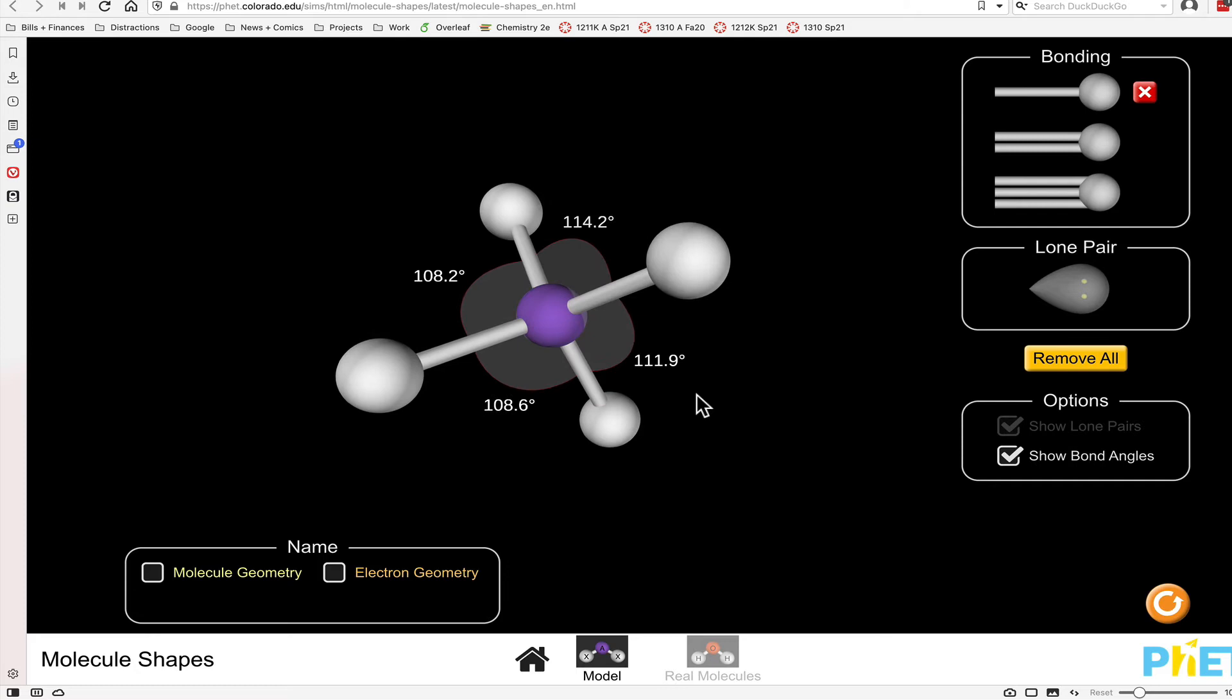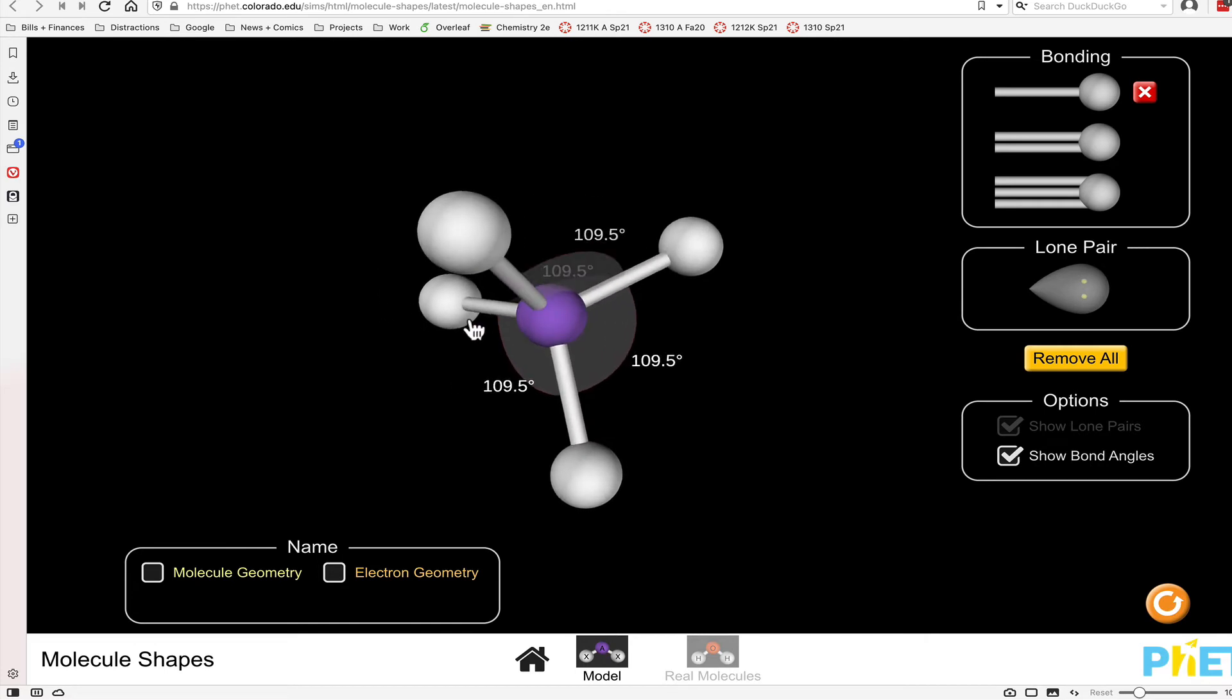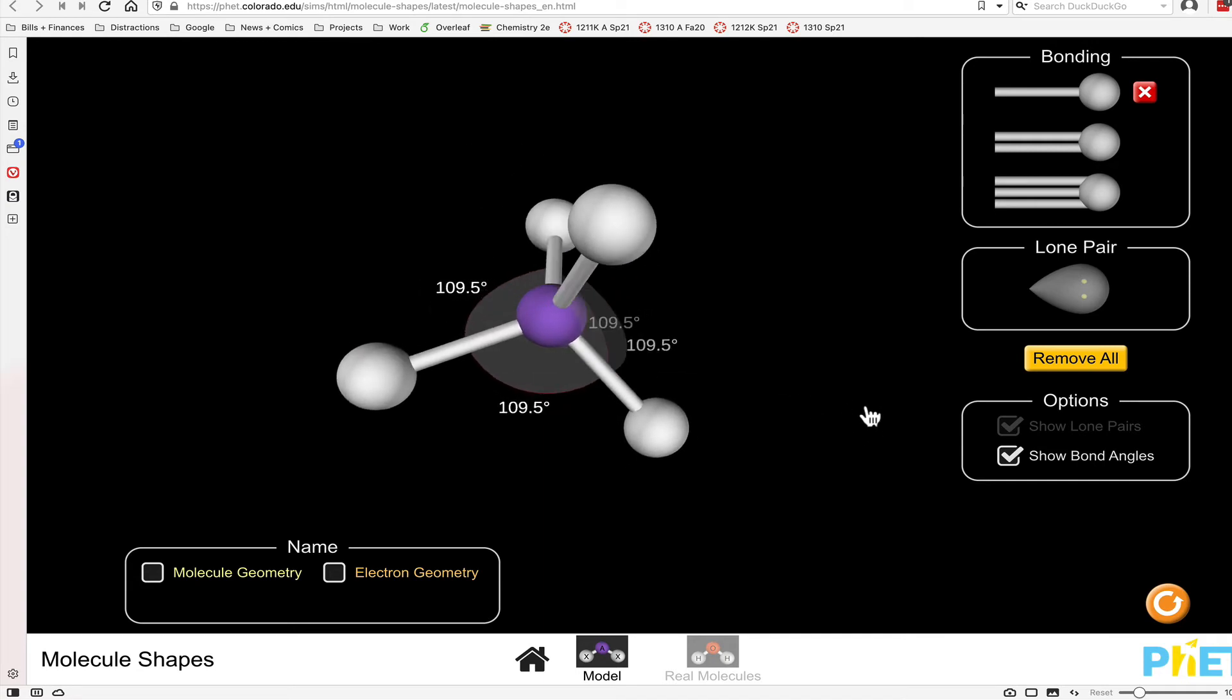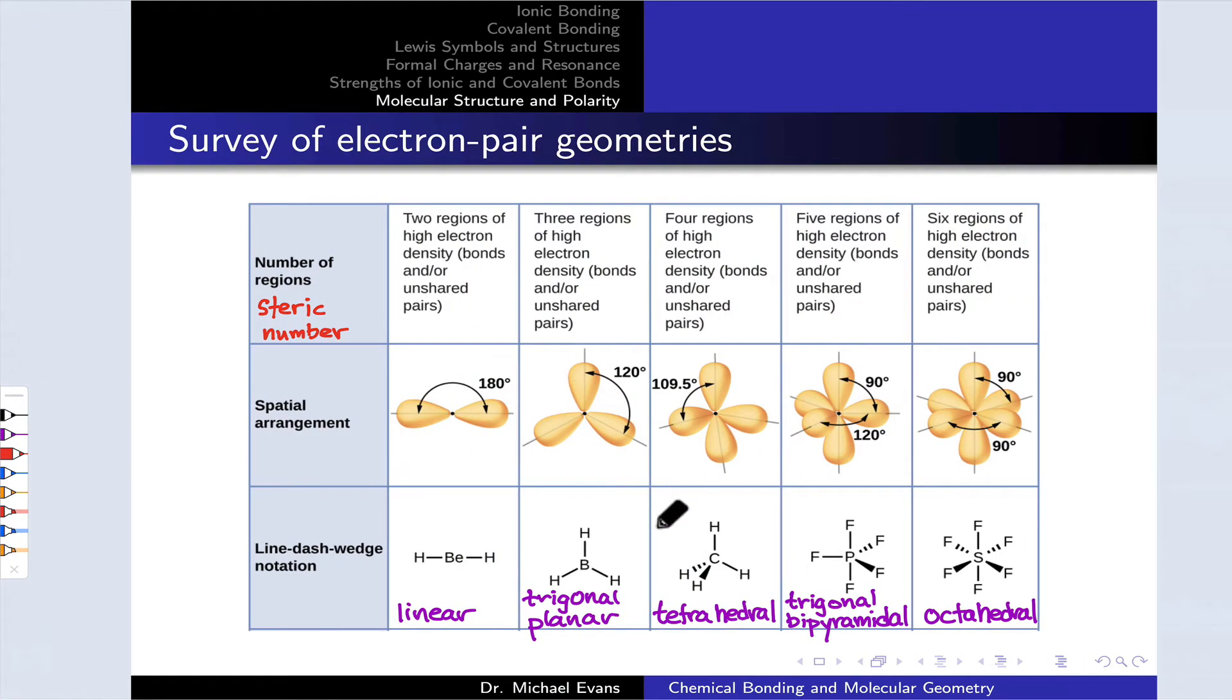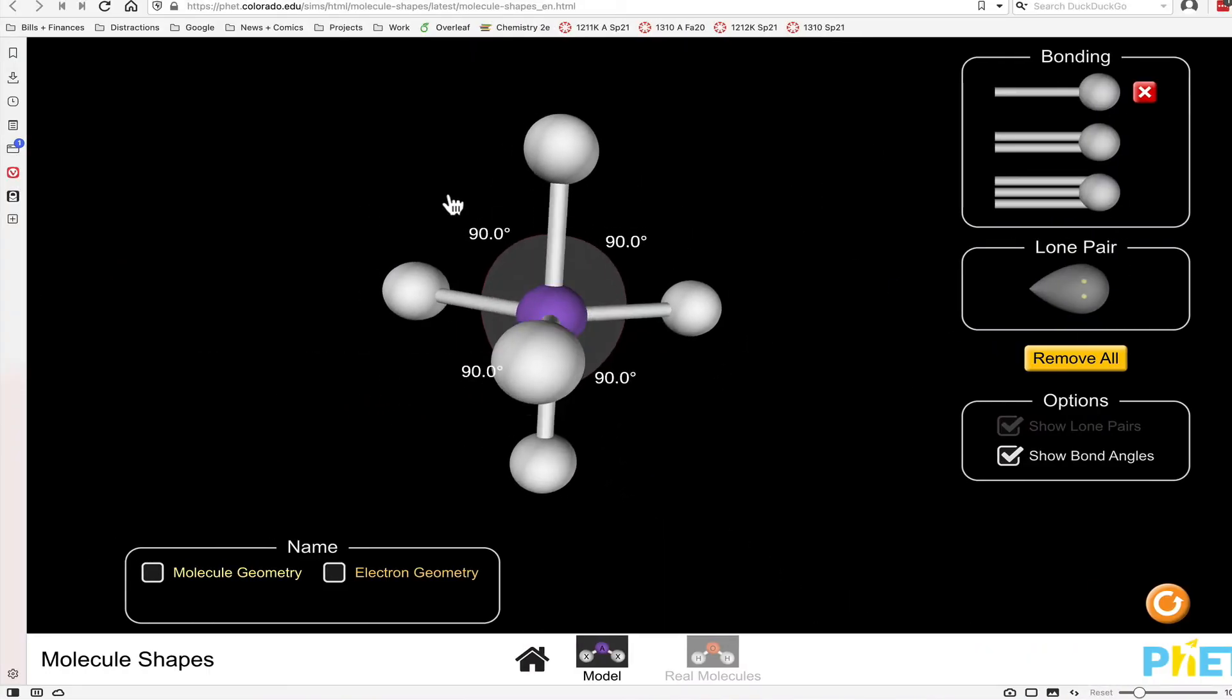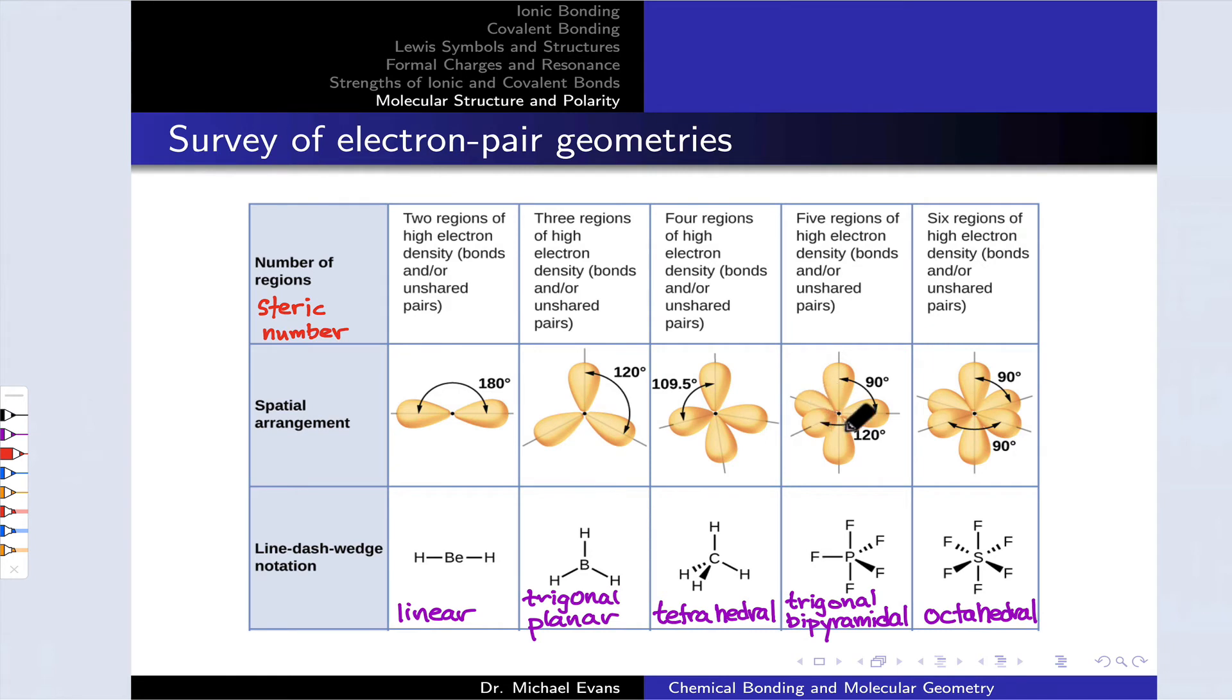If we add a fourth region of electron density, we're now at 109.5 degree bond angles. This is known as the tetrahedral geometry, and it really brings us into the third dimension. You can see that regardless of how we position this, there are going to be bonds pointed towards us and away from us in three dimensions. A fifth region of electron density leads to the trigonal bipyramidal electron group arrangement. Here we have a trigonal plane with two groups or lone pairs above and below that trigonal plane. This is known as trigonal bipyramidal because it looks like two trigonal pyramids sharing a base.